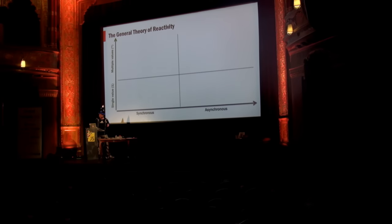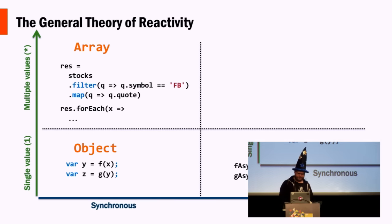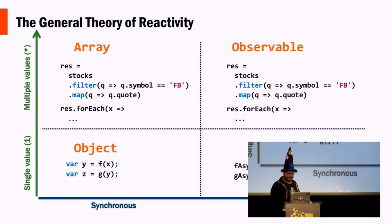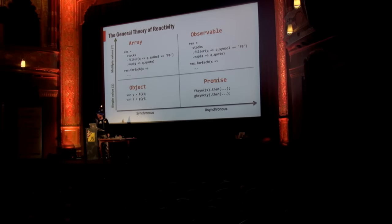Where does observable fit? We have synchronous and asynchronous with multiple and single values. For synchronous single value: object. For multiple values: array. Then for async single value: promise. And the observable covers async multiple values — you'll see the exact same code applies from array to observable, no changes, other than the fact that it's an observable source.